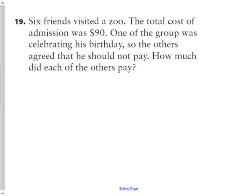Question 19 says six friends visited a zoo. The total cost of admission was $90. One of the group was celebrating his birthday, so the others agreed that he should not pay. How much did each of the others pay? So $90 divided between how many friends paid? Five people. Since 100 divided by 5 was 20, 90 divided by 5 will be 10 less than that, $18 each.